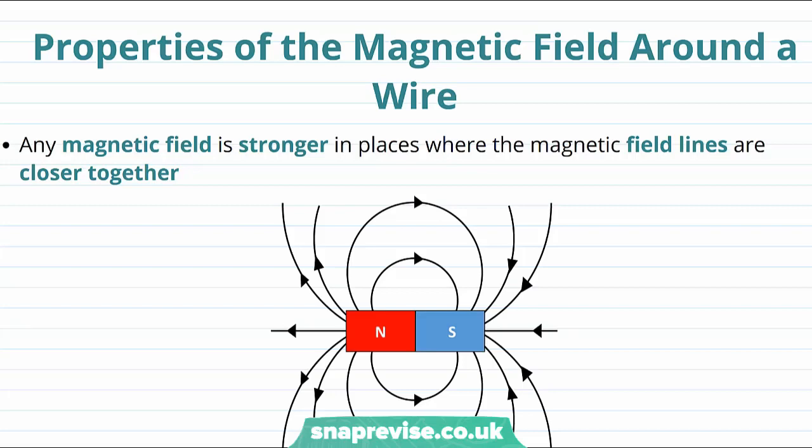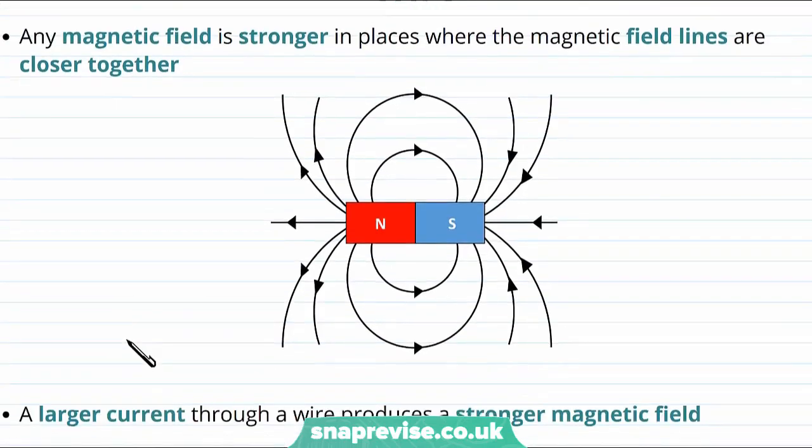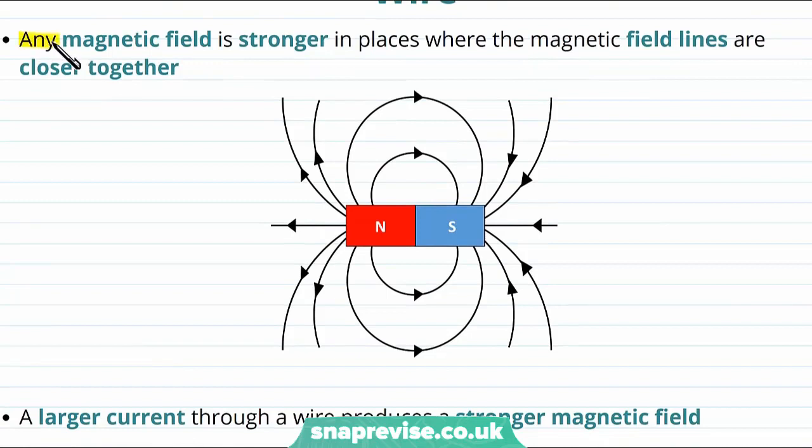So let's think more about the properties of this magnetic field going round a current carrying wire now. And let's remember one fact which is that any magnetic field is stronger in places where the magnetic field lines are closer together.